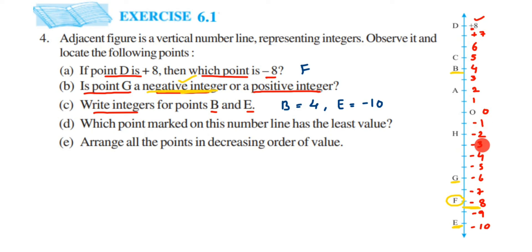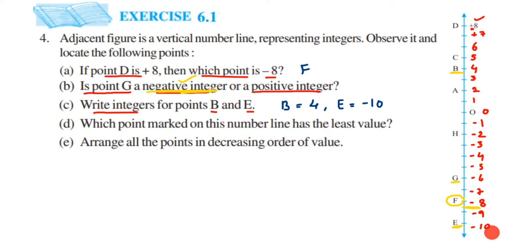If a number is greater with a negative sign, that number becomes the smallest — it has the least value. Here, 10 is the greatest number with a negative sign, so minus 10 will have the least value. Minus 1 is greater than minus 10. The greater the integer with a negative sign, the smaller the value it has. So the answer for the fourth question is minus 10, or we can say point E.